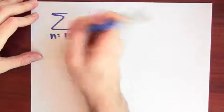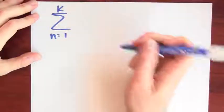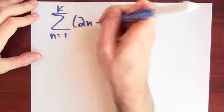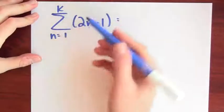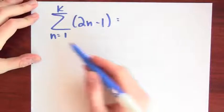Since I know about triangular numbers and I know how to sum constants, I can combine those two facts to sum more complicated expressions. For example, let's do the sum as n goes from 1 to k of 2n minus 1. And what this notation means is that I plug in the numbers from 1 to k into this expression and add them up.